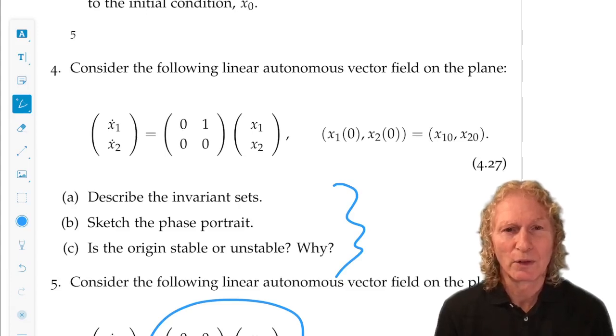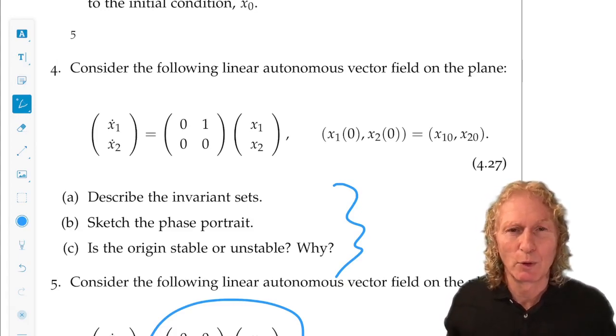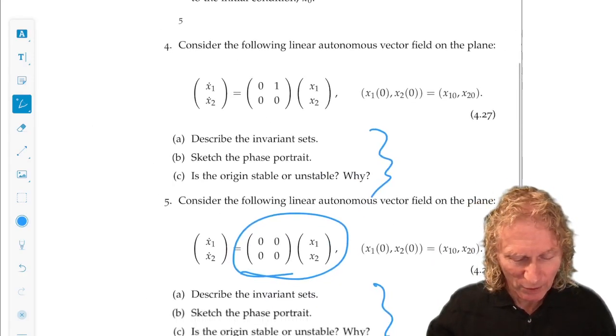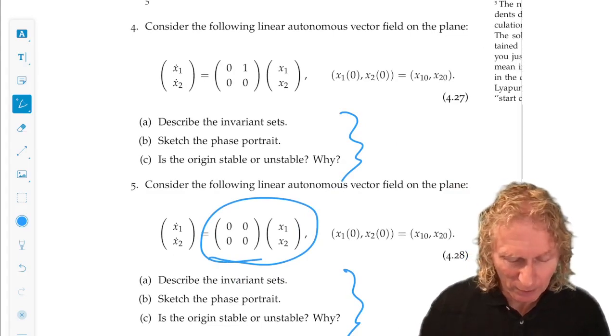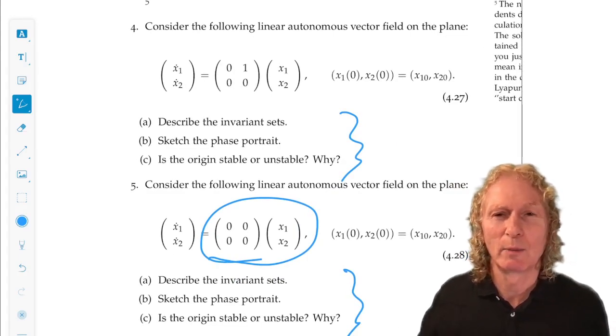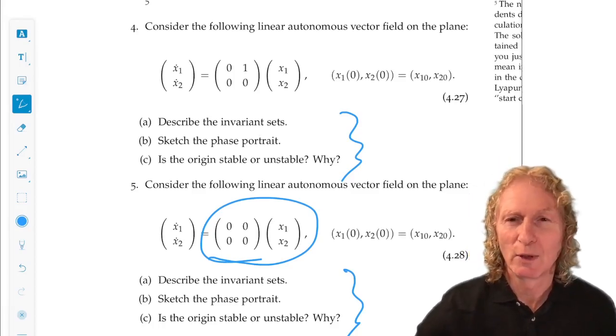You can sketch the phase portrait. Is the origin stable or unstable? It's unstable, because if you start close to it, you can move away. This is a nice, simple exercise. Both of these are really kind of to clear your palate before a gourmet meal, which awaits you for the rest of this course.